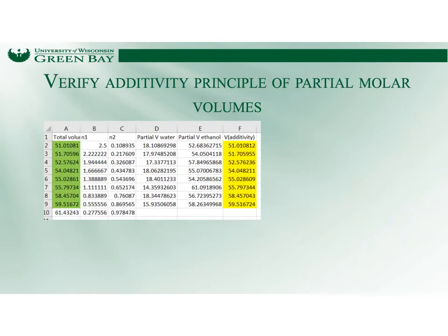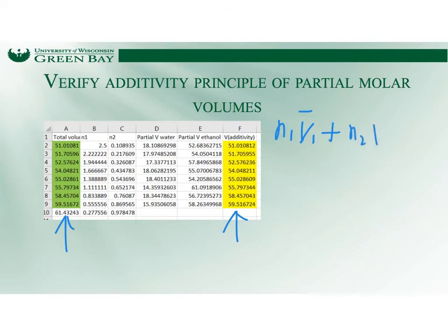Finally, we check the additivity theory. Column A contains the total volume from total mass divided by density. Column F is computed from N1·V1-bar plus N2·V2-bar. Comparing Column F to Column A, the values are exactly the same, confirming the additivity principle.